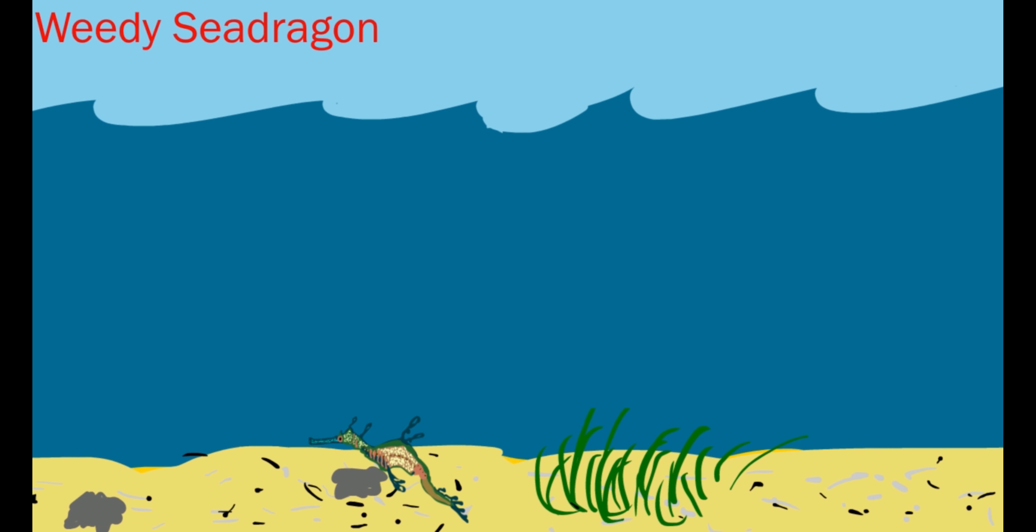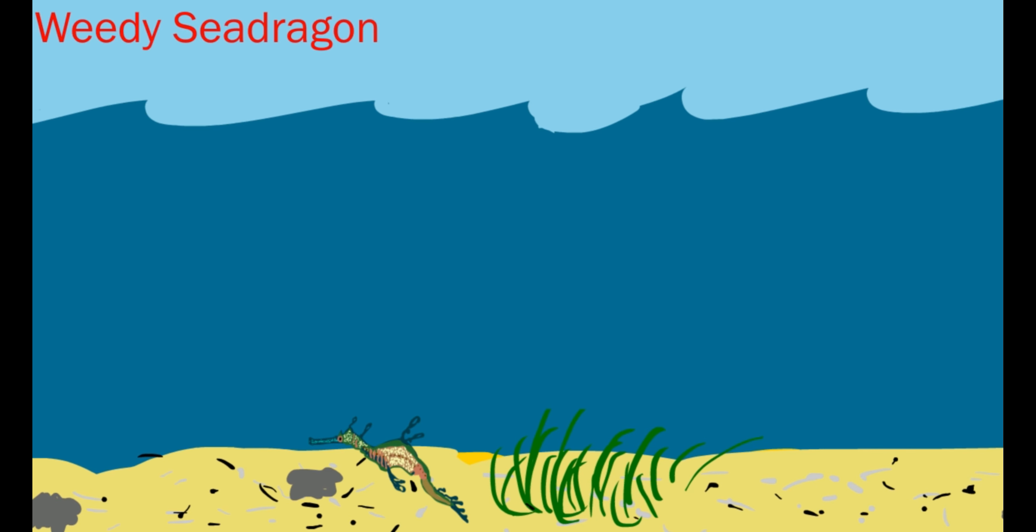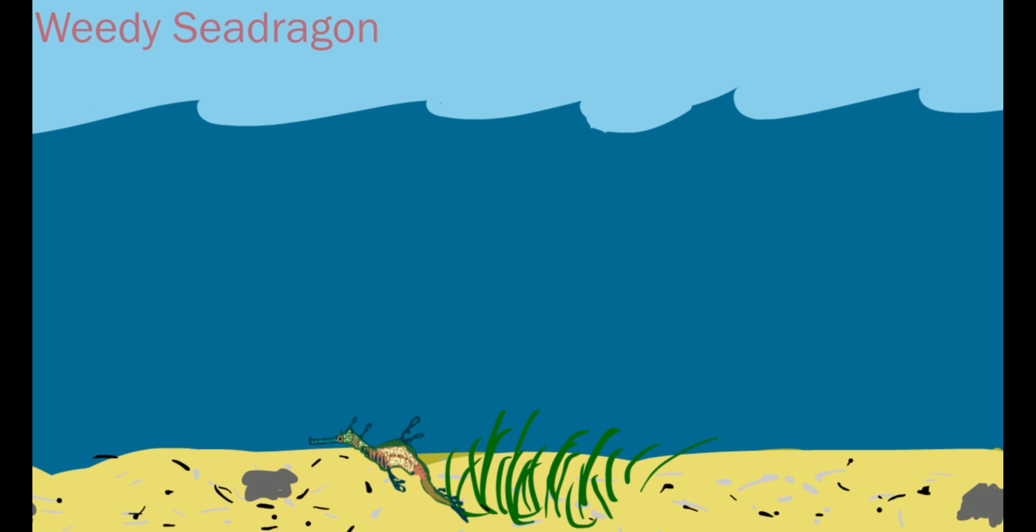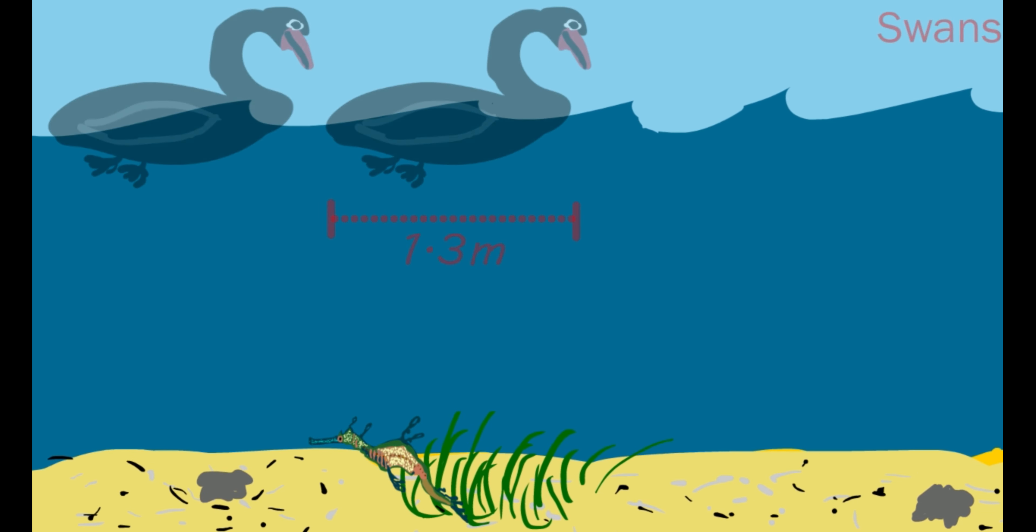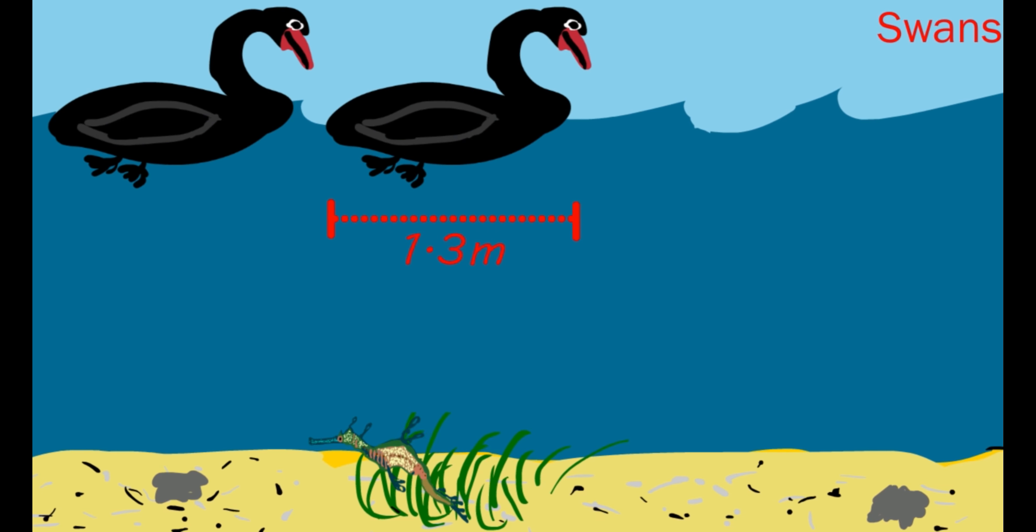They are not strong swimmers, so they like to hide from the bay's currents among the seagrasses we talked about earlier. Other animals that like to hide in the seagrasses are pot-bellied seahorses and pipefish.